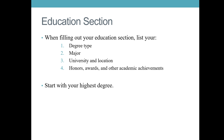Now the education section — this is pretty straightforward. Write your degree type, major, university location, and award. Include the college name, degree, and GPA. For experienced candidates, just the degree, college name, and year of graduation is sufficient — GPA does not matter later in the career. Focus on just those three things.